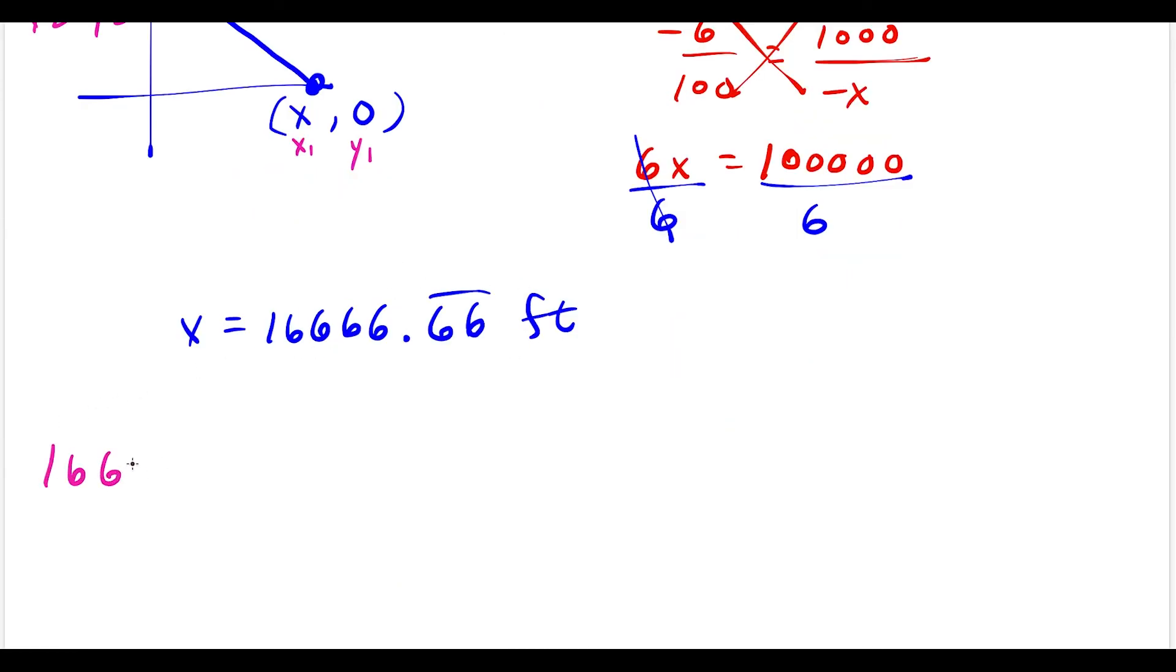So we have 16,666.66̄ feet. To convert to miles, we multiply by 1 mile/5,280 feet because there are 5,280 feet in a mile. This is our conversion factor. The units cancel—feet over feet—and now we're dividing this number by 5,280. Rounding to the nearest hundredth, this is 3.16 miles. This is our final answer to the second word problem.